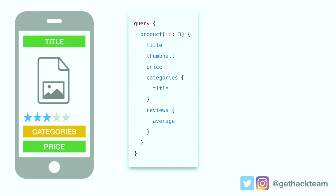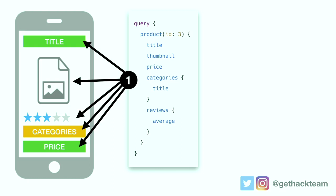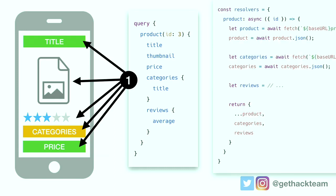This already looks way cleaner than sending three different fetch requests. It's a query, and it will give me all this information I want — getting a product with a specific ID, and it will have a title, thumbnail, price, category information, and reviews. So I gathered all this information from my REST API using the GraphQL server. The resolvers are the magic link between the REST API you have — or it can also be a database, especially a document-based database like MongoDB, which works really well together with GraphQL — but it can also work with MySQL, Postgres, or any other relational database.